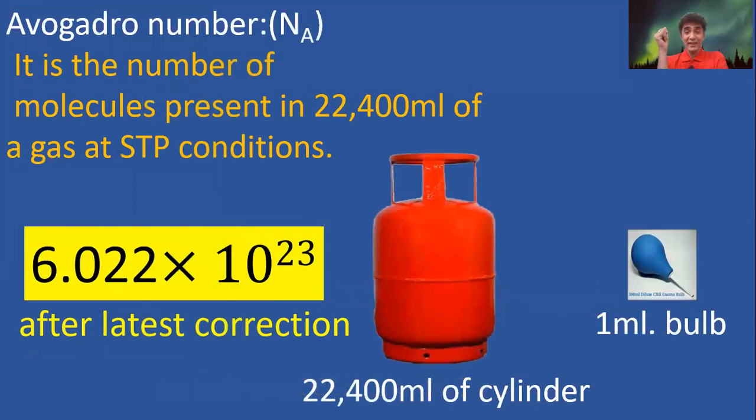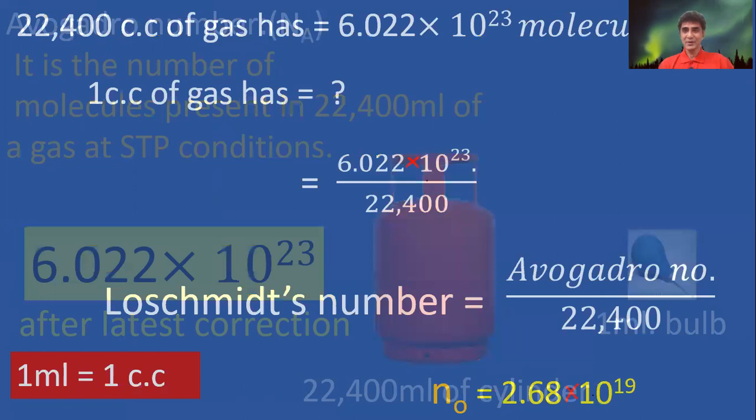What is Avogadro's number? It is the number of molecules present in 22,400 ml of gas at STP conditions. This is the value of Avogadro's number after correction. The earlier value is different.